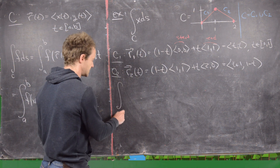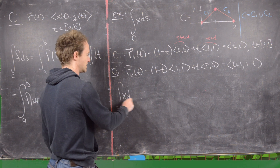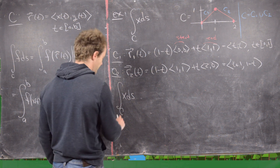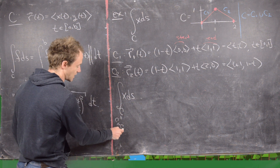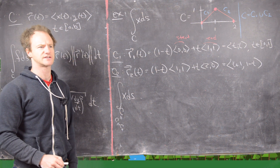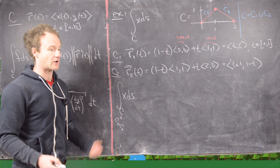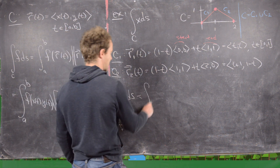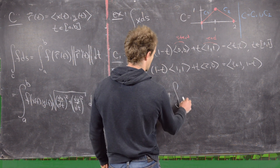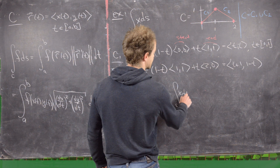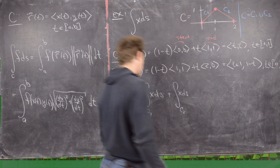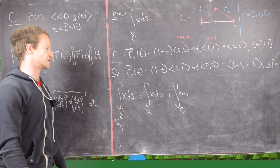Now we can use the fact — which I haven't proven, but it's pretty obvious — that if C is the union of C1 and C2 where these curves only intersect on their boundaries, then the line integral over C of x ds equals the line integral over C1 of x ds plus the line integral over C2 of x ds. We can take those parametrizations for each of these.